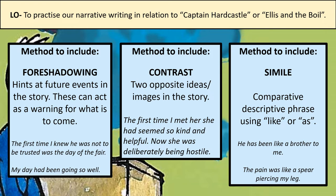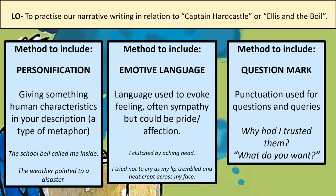All of these methods are in your workbook as well. I'd also like you to try and include some personification — giving something human characteristics. For example: 'The school bell called me inside.' The school bell can't actually call somebody, but that's personification. And 'The weather pointed to a disaster' is also an example of pathetic fallacy — you might remember that one — where you use the weather to convey a mood or an emotion. Think about how you could use pathetic fallacy and personification in your story.